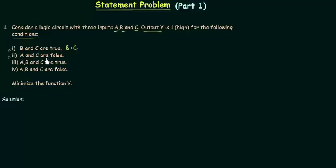The second condition says A and C are false. So we have to take A complement and C complement because they are false. According to the third condition, A, B and C are true. So we have to take A and B and C.